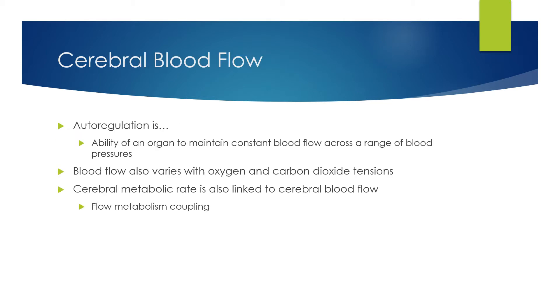Cerebral blood flow is autoregulated. Autoregulation is the ability of an organ, in this case the brain, to maintain constant blood flow across a wide range of blood pressures. Cerebral blood flow also varies with oxygen and carbon dioxide tensions, and is linked very closely with cerebral metabolic rate - this is so-called flow-metabolism coupling.